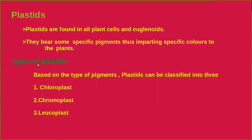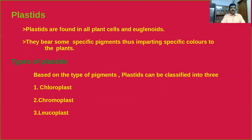Based on the type of pigments, plastids can be classified into three categories: first, chloroplasts; second, chromoplasts; and third, leucoplasts.